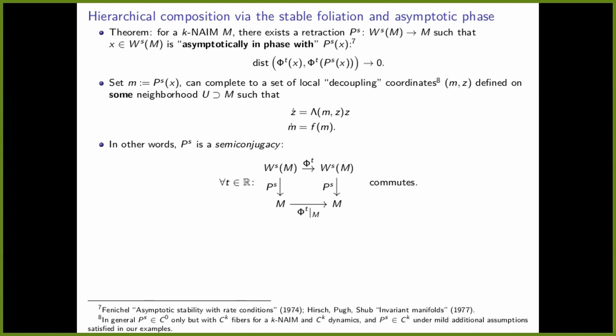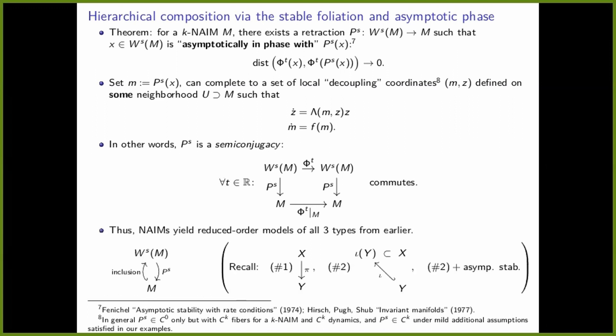In more coordinate-invariant terms, this projection map P — which I like to call the asymptotic phase map — is a semi-conjugacy: this diagram commutes for all time. You can flow and project, and that's the same as projecting and then flowing. NIMs yield reduced order models of all three types: not only is there an obvious copy of the NIM inside the manifold (already a subset), not only do nearby trajectories converge to the NIM (collapse of dimension), but there is also a built-in projection from the basin of attraction of the NIM to the NIM which respects the dynamics.